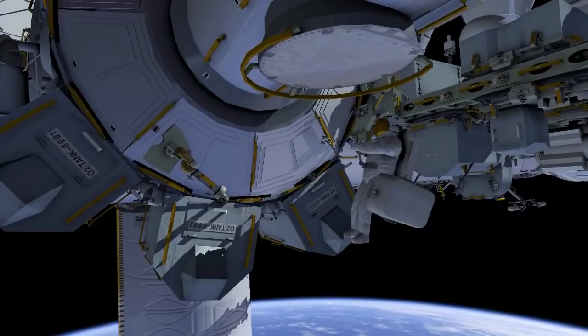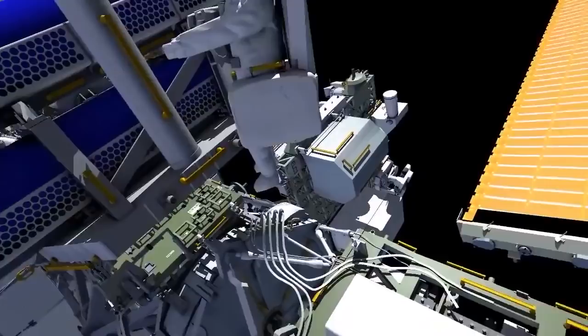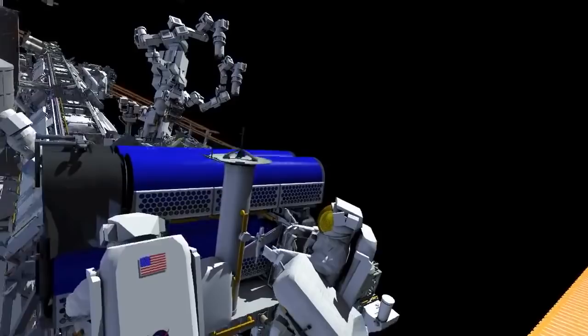Shane will be retrieving and articulating portable foot restraint and putting his stowage bag onto it for translation outboard. Thomas makes his way out to the carrier that has the solar arrays stowed on it. Shane follows along the truss and meets Thomas at the carrier.